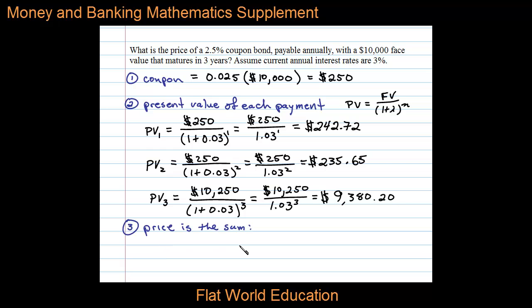Finally, to calculate the price of this coupon bond, we add all the present values of the payments. In this case, the price is equal to the sum of these three values, which comes out to $9,858.57.